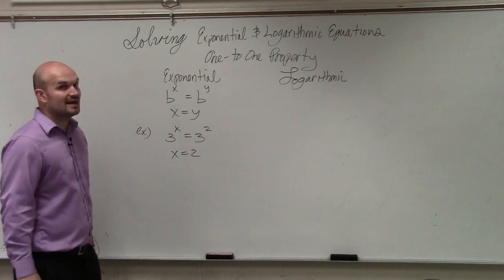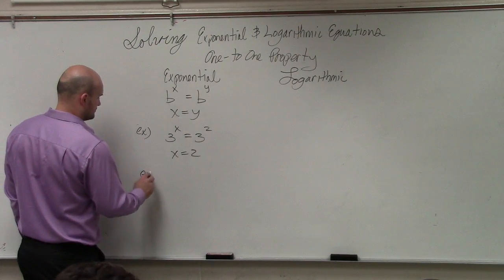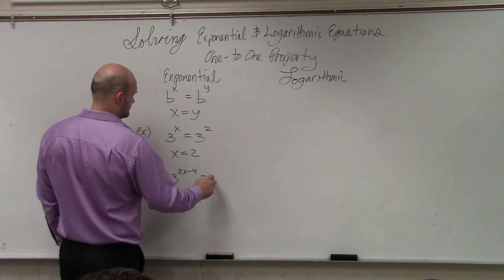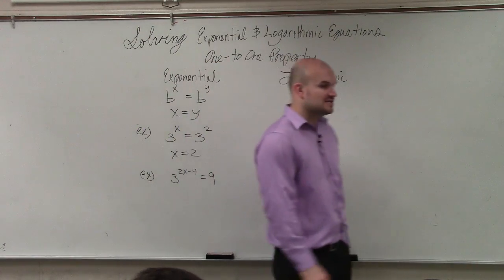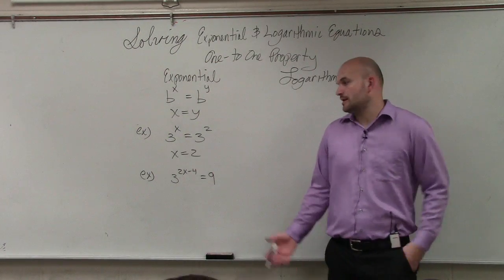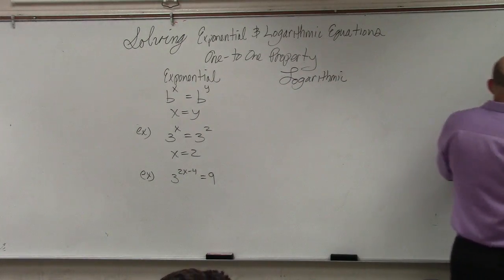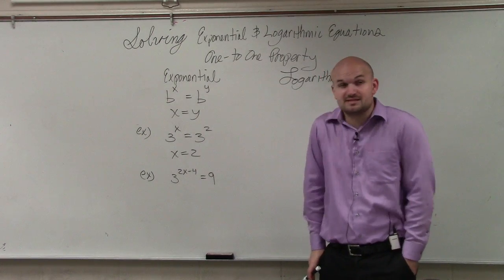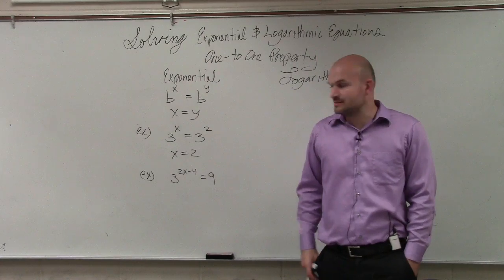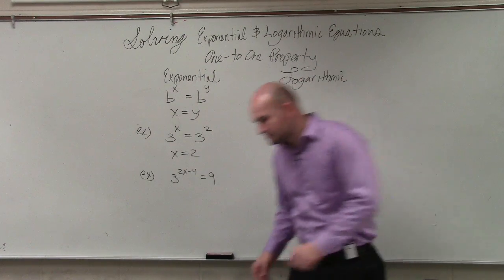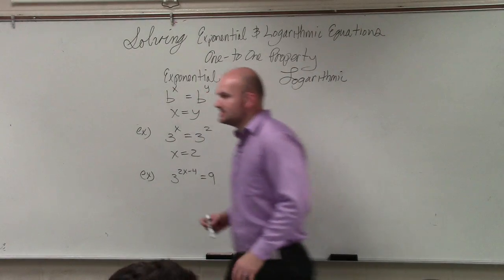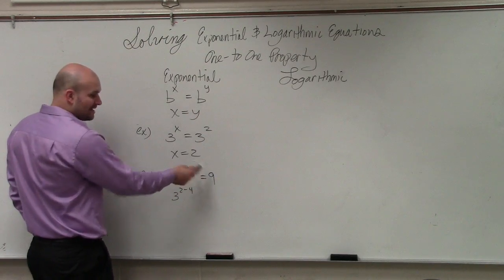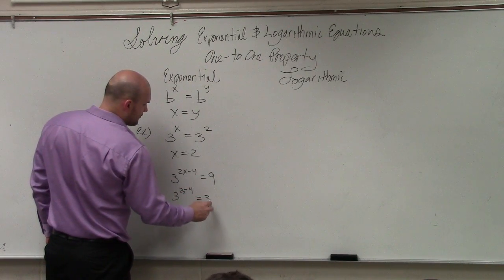Okay. Sometimes, though, it's not that obvious. So sometimes we have an equation that looks something like this. All right? So in this example, the bases are not exactly the same. So what we need to simply do is look into rewriting them so that they can be exactly the same. So if you guys go ahead and take a look at this, if you rewrite this as 3 to the 2x minus 4, I can rewrite 9 as 3 squared, right?